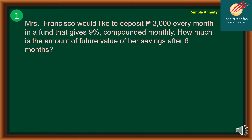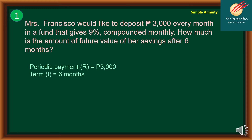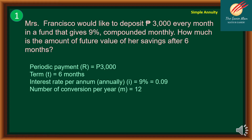To illustrate simple annuity, let us consider problem number one. Mrs. Francisco would like to deposit P3,000 every month in a bond that gives 9% compounded monthly. How much is the future value of her savings after six months? The given are: periodic payment R = 3,000; term T = 6 months; interest rate per annum I = 9%; number of conversions per year M = 12; and interest rate per period J = I/M = 0.0075.